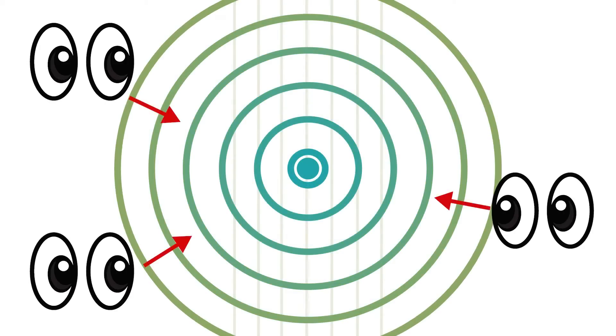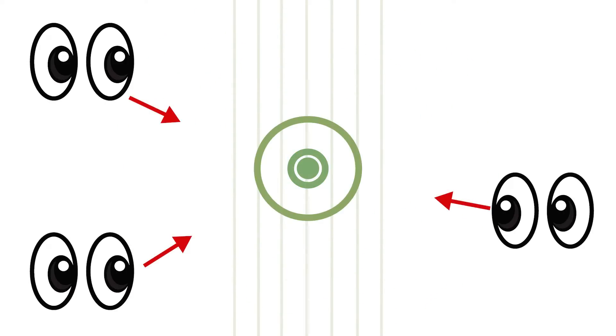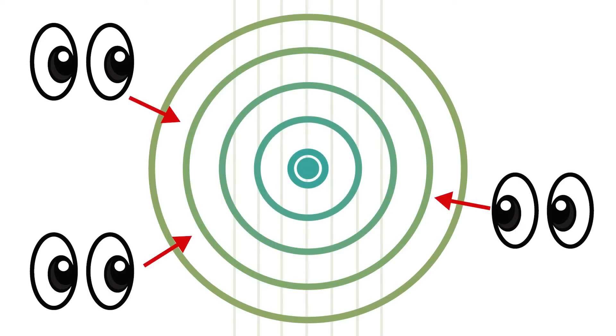If the light source isn't moving, then no matter where you look at it from, the wavelength is the same, so the light looks the same.